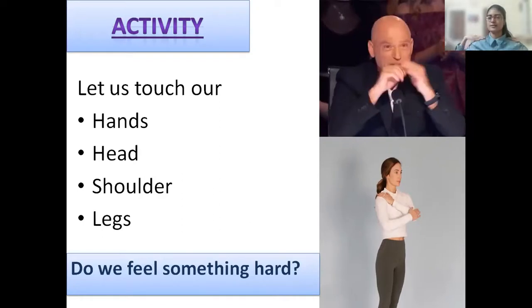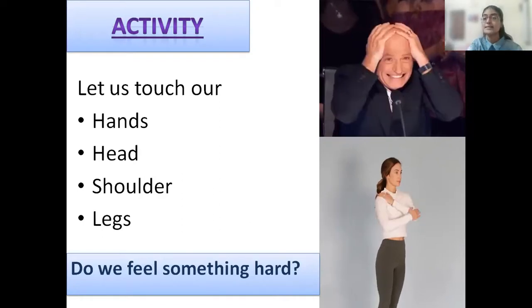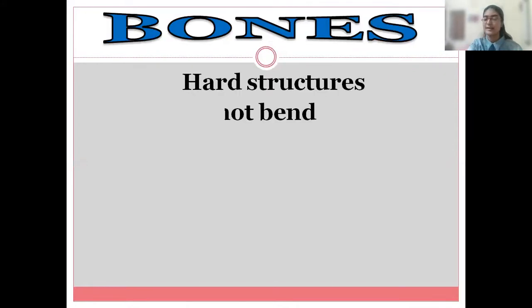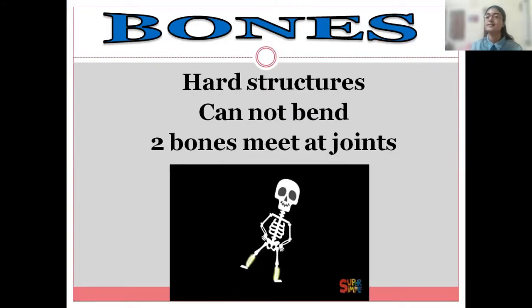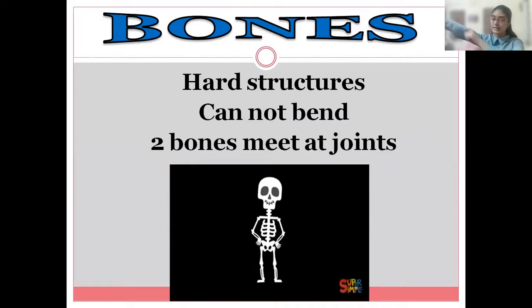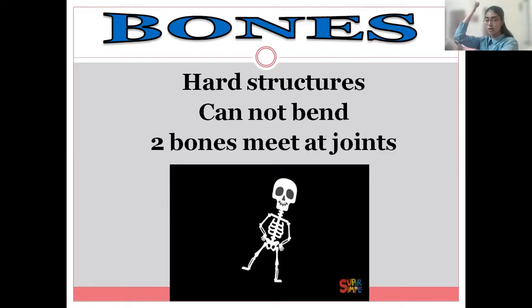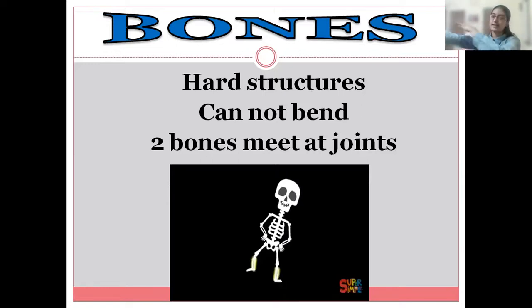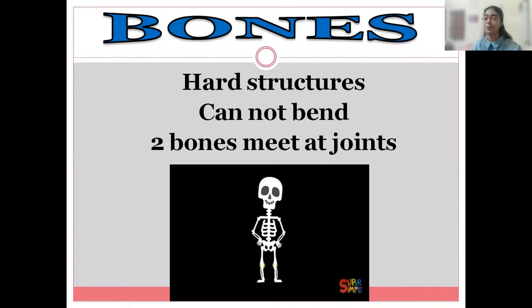Right? In your head, shoulders? What are these hard parts called? These structures are known as bones. Now, previously we saw that two parts are joined and makes a joint. So, these two parts are what? Bones. Very good.